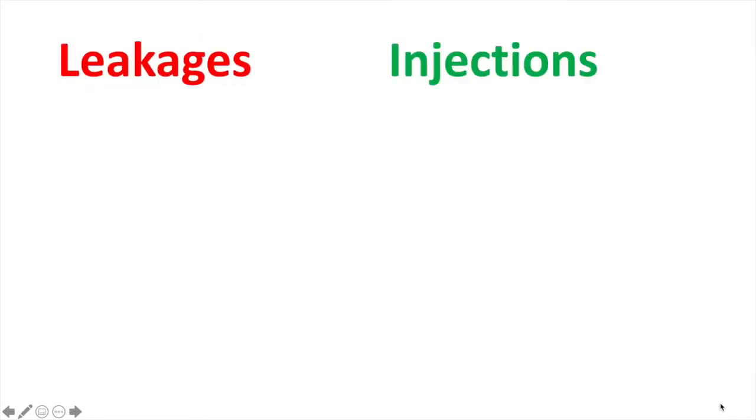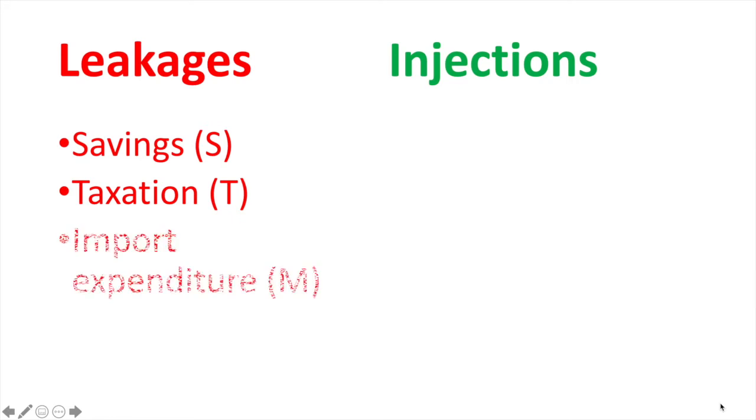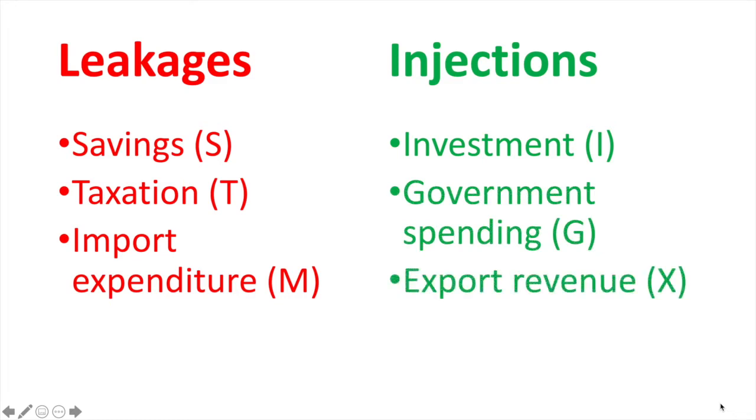Let's refresh our knowledge of leakages and injections. The leakages out of the circular flow include savings, taxation, and import expenditure. The injections into the circular flow of income include investment, government spending, and export revenue.